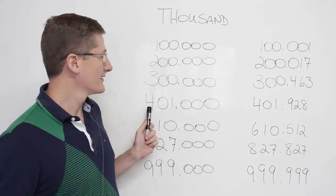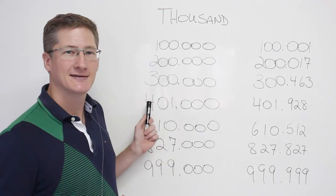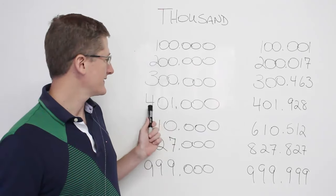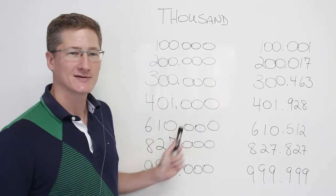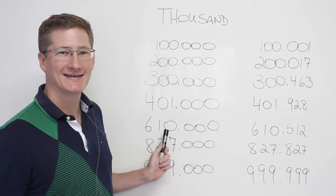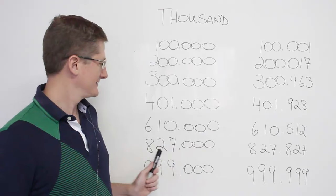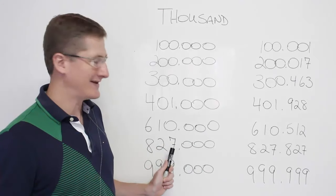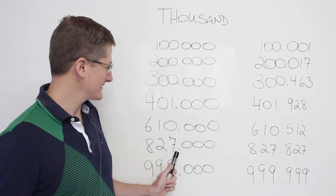Here we have 401. So we say 401,000. 610,000. Here we have 827,000, okay?